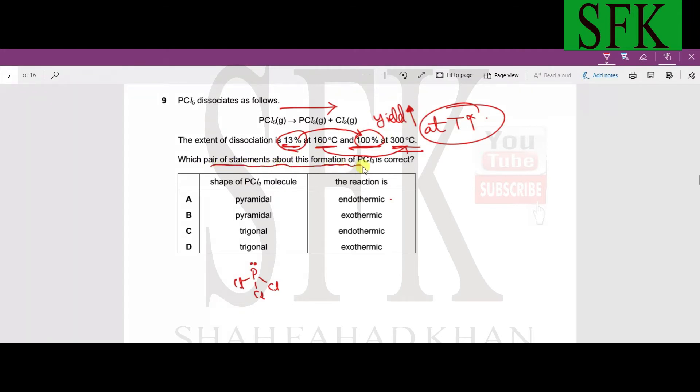Which pair of statements about this formation of PCl3 are correct? What about the shape and the reaction? We just figured out that it's endothermic so either A or C. Now let's look at the shape. From the theory part we know that PCl3 is actually pyramidal, it contains a bond angle of 107 degrees. So basically it's pyramidal, the answer option is going to be A. It is not trigonal because it has a lone pair.